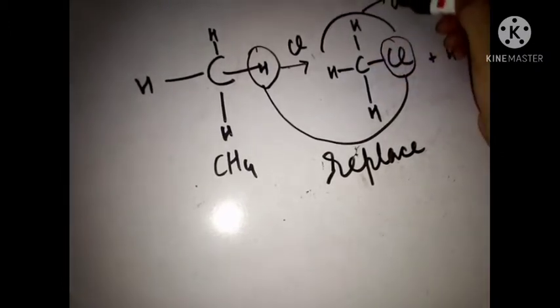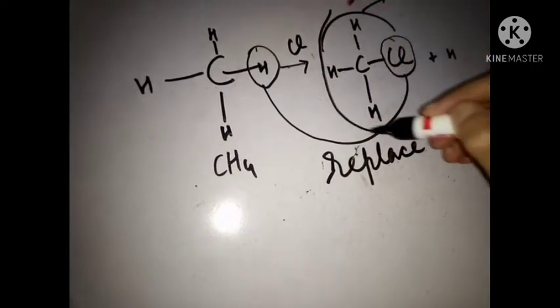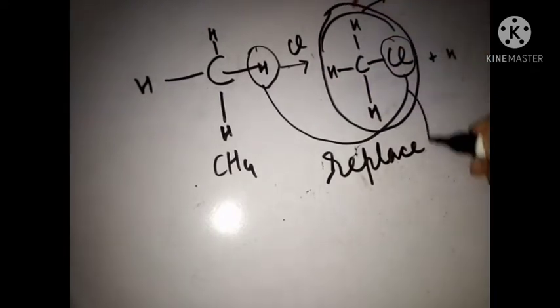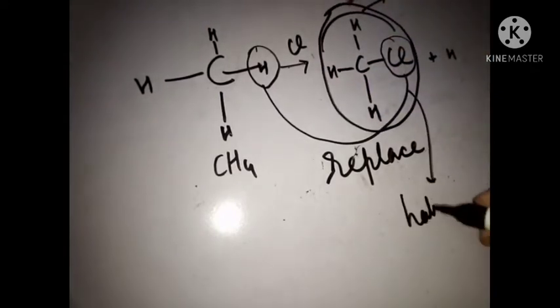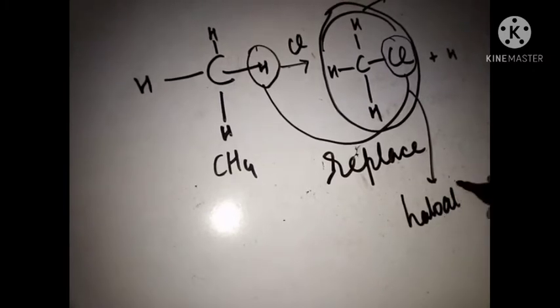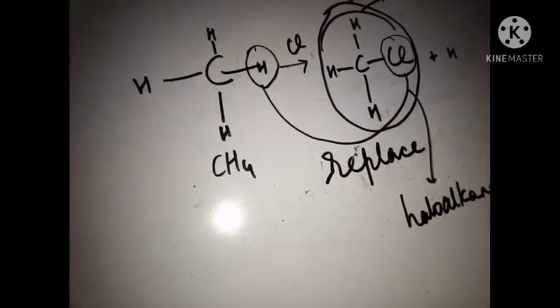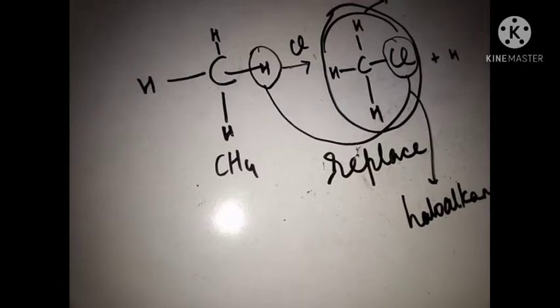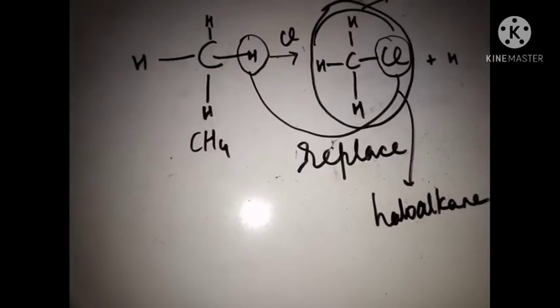This is a haloalkane because we have replaced one H with Cl. So its name will be chloromethane and it is an example of haloalkane.